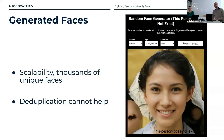You might object that adding active liveness into the process — like smile liveness or magnify liveness — would prevent this kind of attack with just one single photo.